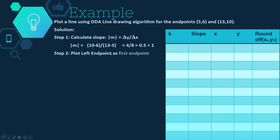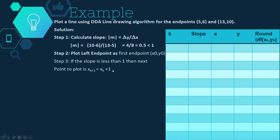Step two is to plot the left endpoint as the first point, that is X0, Y0, which is (5, 6). Then step three: since the slope is less than 1, we calculate the next point. XK+1 is going to be XK plus 1 — you add 1 to it. And YK+1 is going to be YK plus the slope M. So you add the slope to get the next point to plot.